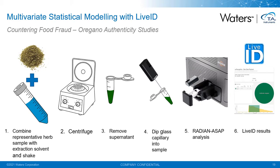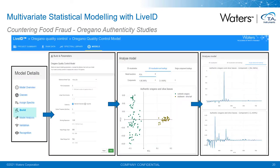One of the other areas we're looking at using Radian ASAP is food authenticity and adulteration, using the multivariate statistical modeling workflow in LiveID. In this example, we're looking at the adulteration of dried oregano with other contaminants such as olive leaves. To promote like-for-like analyses, a simple solvent extraction was carried out using methanol, and the resultant extract was dipped with the capillary to load the sample prior to analysis and real-time sample classification against a statistical model using LiveID. To generate the model, we ran two technical replicates of 35 authentic oregano samples and 18 authentic olive leaf samples in a randomized order over two days and generated a PCA-LDA model.